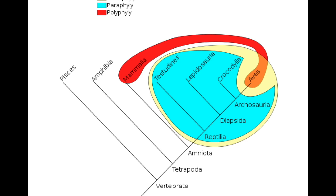For the Vertebrata, any other animals that are in this lineage — none of them have a vertebral column. So this characteristic of having vertebrae is actually a derived characteristic, and it's shared by all of these lineages up here. That is a shared derived characteristic: having vertebrae.